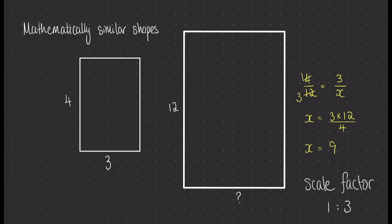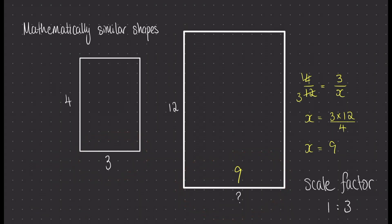Now that I've worked out that the bottom length is 9, if I construct the scale factor using the bottom side of the shape, I find that the ratio 3 to 9 is in fact exactly the same as what I worked out previously: 1 to 3.